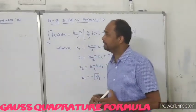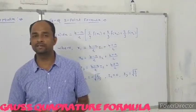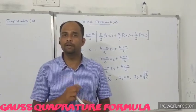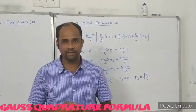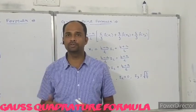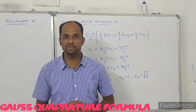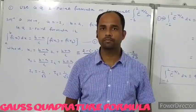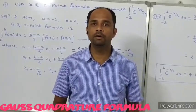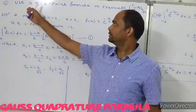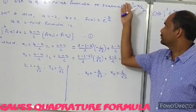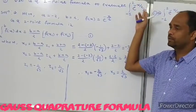Using these two formulas — the Gauss Quadrature 2-point formula and the Gauss Quadrature 3-point formula — we will find out the value of a definite integral or the area under the curve. Now we see the first example on Gauss Quadrature rule: use the Gauss Quadrature 2-point formula to evaluate the integral from minus 2 to 2 of e to the power of (minus x squared) upon 2.